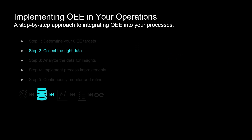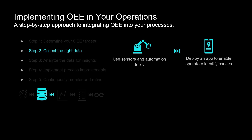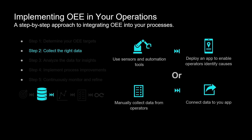Step 2: collect data using sensors and automation tools, and deploy an application to enable operators to identify downtime causes. Utilize a scalable application that can seamlessly connect to your infrastructure and software. Alternatively, set up a production tracking procedure at your workstations to enable operators to collect data, which can then be transferred to your application. For more information, check out the link in the description.